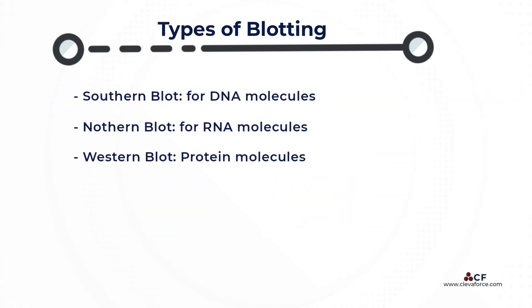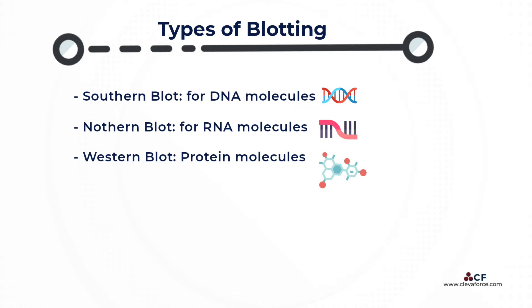Depending on what molecule is being identified, there are three types of blotting commonly known: Southern blot for DNA molecules, Northern blot for RNA molecules, and Western blot for protein molecules.